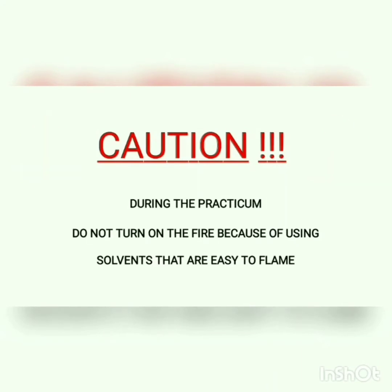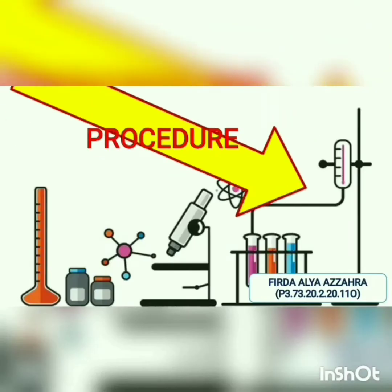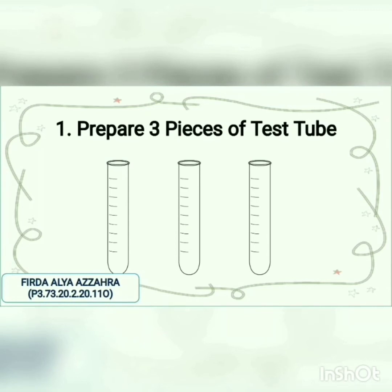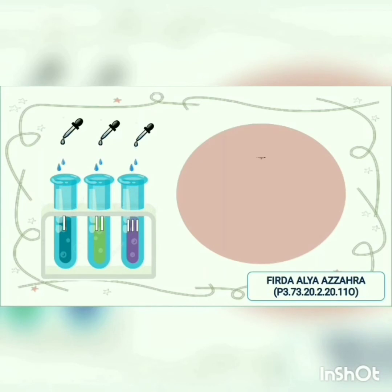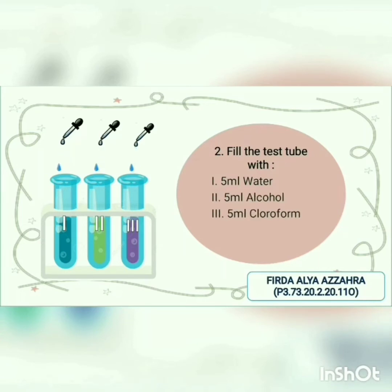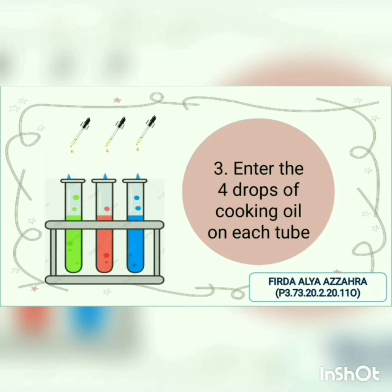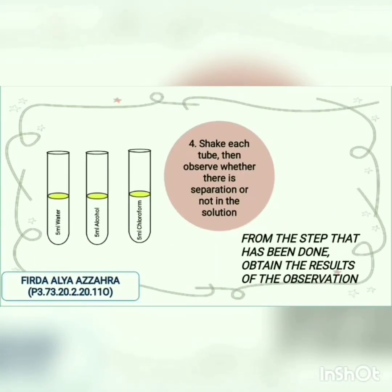Caution: during the practicum, do not turn on the fire because of using solvents that are easy to flame. Procedure: One, prepare 3 pieces of test tube. Two, fill the test tubes with 5 ml water, 5 ml alcohol, and 5 ml chloroform. Three, add 4 drops of cooking oil to each tube. Four, shake each tube then observe whether there is separation or not in the solution and obtain the result of the observation.